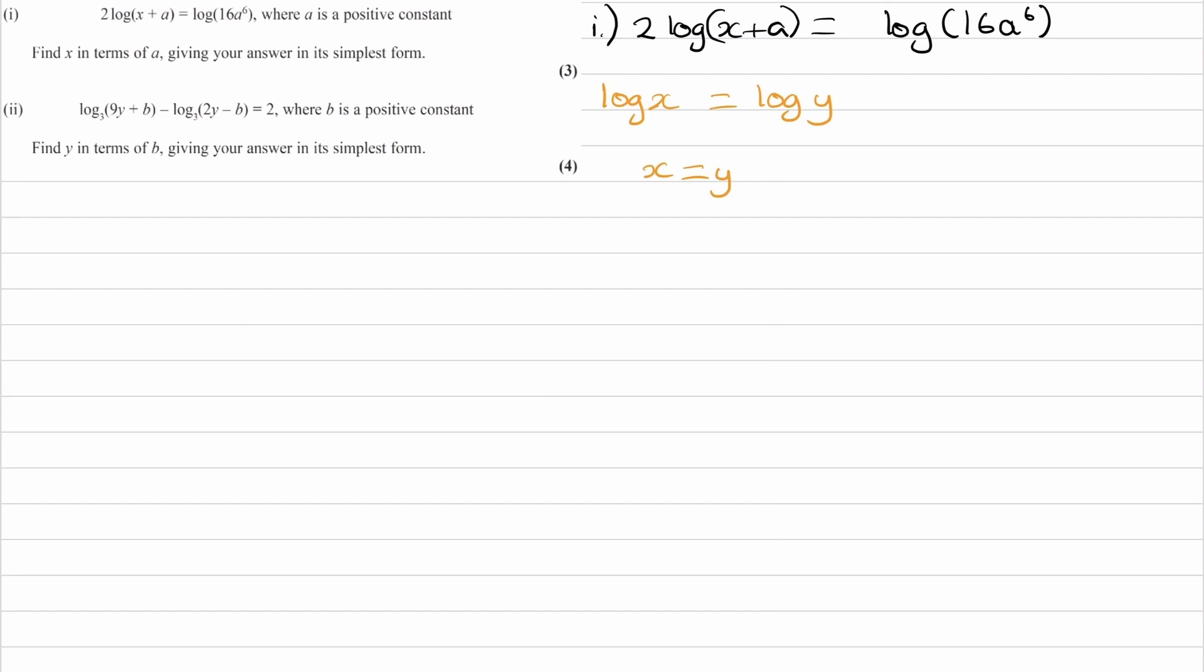And another way that you can think about that is if you were to do 10 to the power of both sides, because 10 to the power of something and log to the base 10 of something are inverse operations, then those two things will cancel out, the 10 to the power of and the log to the base 10 of, and then you're left with x is equal to y.